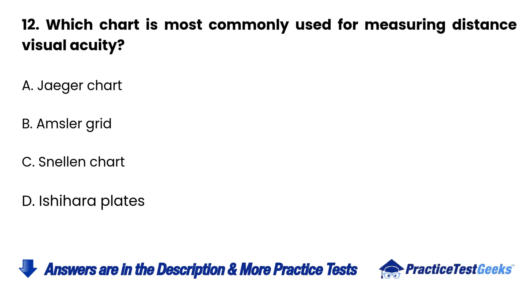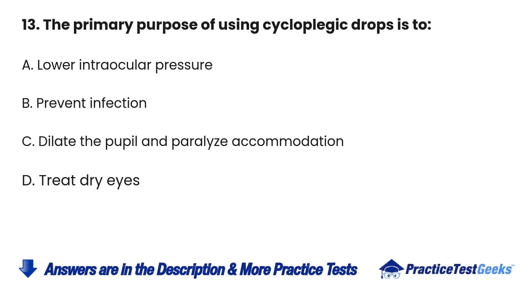12. Which chart is most commonly used for measuring distance visual acuity? A. Jaeger chart B. Amsler grid C. Snellen chart D. Ishihara plates